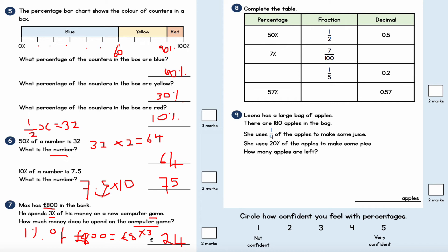This is question number eight: complete the table — percentage, fraction, decimal. The first one is done: 50% equals one half as a fraction and 0.5 as a decimal. Seven percent is 7 out of 100, and as a decimal it's 0.07, because I'm dividing 7 by 100. For 0.215 — multiplying by 100 gives 20 percent. For 57%, as a decimal that's 0.57, and as a fraction it's 57 out of 100.